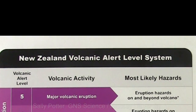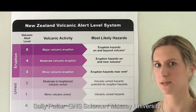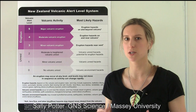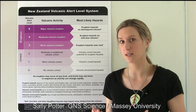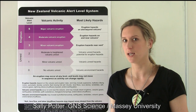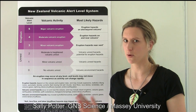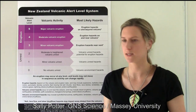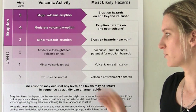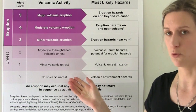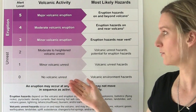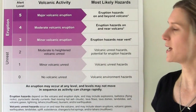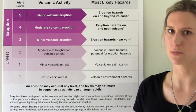This table is the Volcanic Alert Level System for New Zealand. We use it to communicate the level of activity at each of our volcanoes to everybody who needs to know. It ranges from zero, or no volcanic unrest, right through to five, or major volcanic eruption.